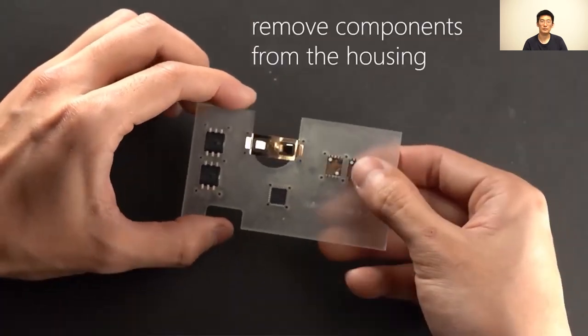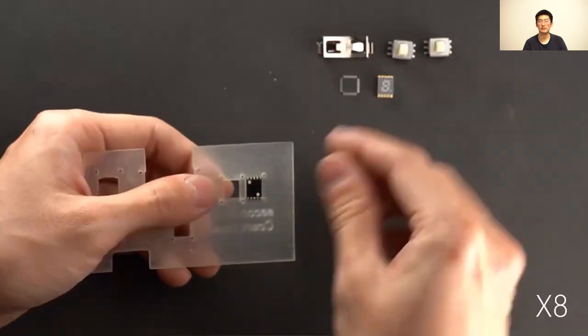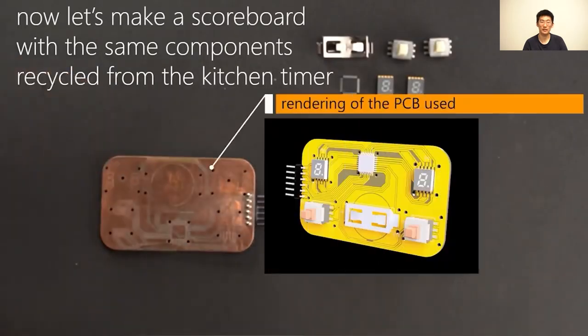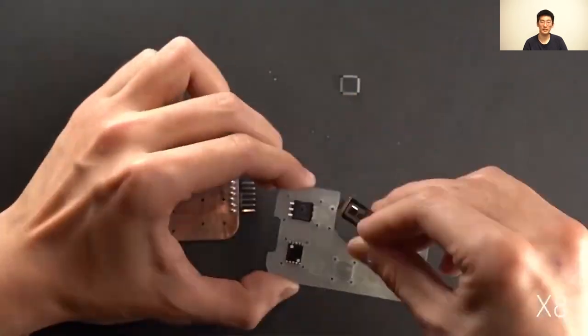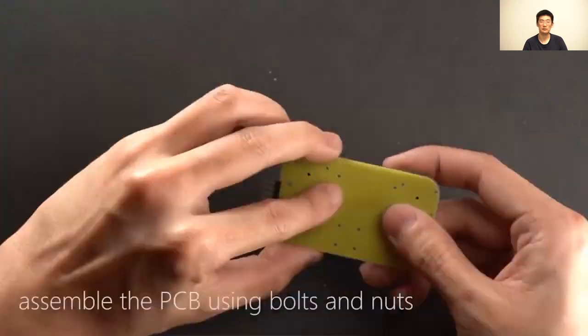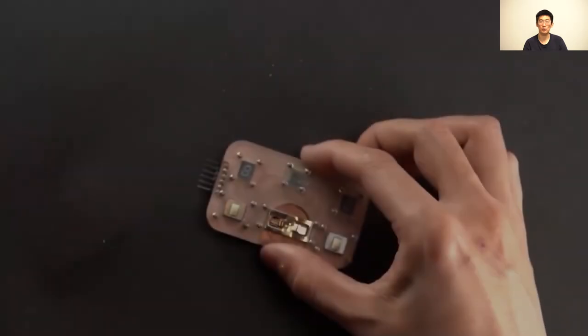And then with the same components, you can put them back into a different set of housing designed according to the other PCB design. And then you can put the components in and bolt on the housing to the PCB board.